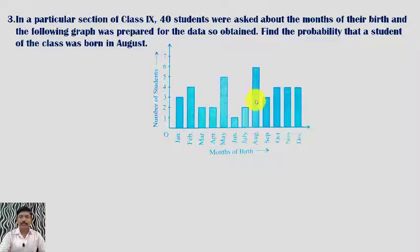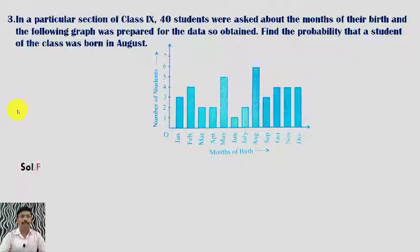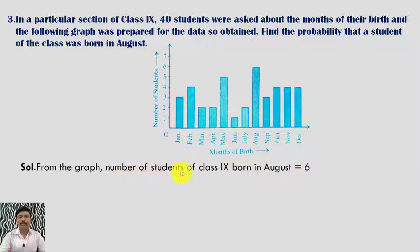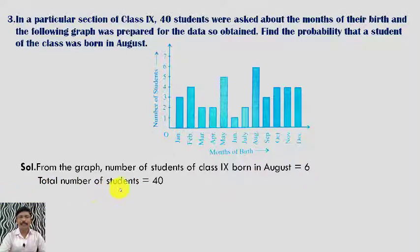Looking at the month of August on the graph, the number of students born in that month is equal to 6. From the graph, the number of students of Class 9 born in August is 6.